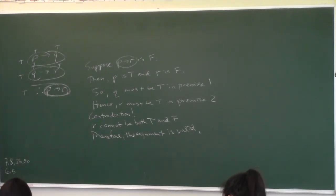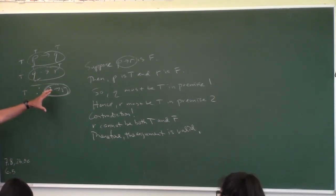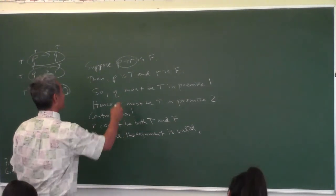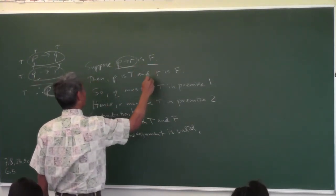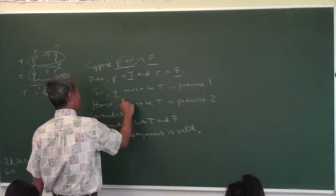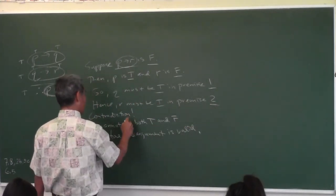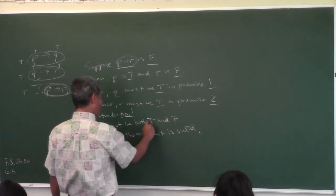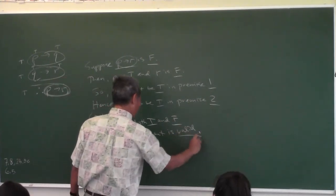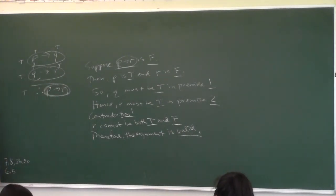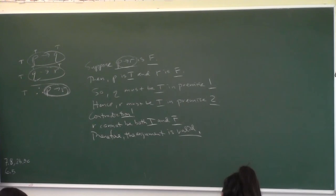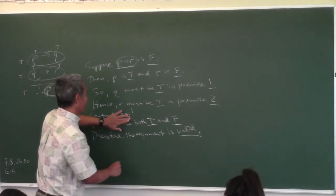Do we have to use that vocabulary on the test? You don't have to write a paragraph on the test — you just have to fill in the blank. It's going to be like this: 'Suppose blank is blank, then P is blank and R is blank. So Q must be blank in premise blank. Hence R must be blank in premise blank. Contradiction blank. R cannot be both blank and blank. Therefore the argument is blank.' You just fill in the blank. Contradiction blank — should I put a period or an exclamation mark?